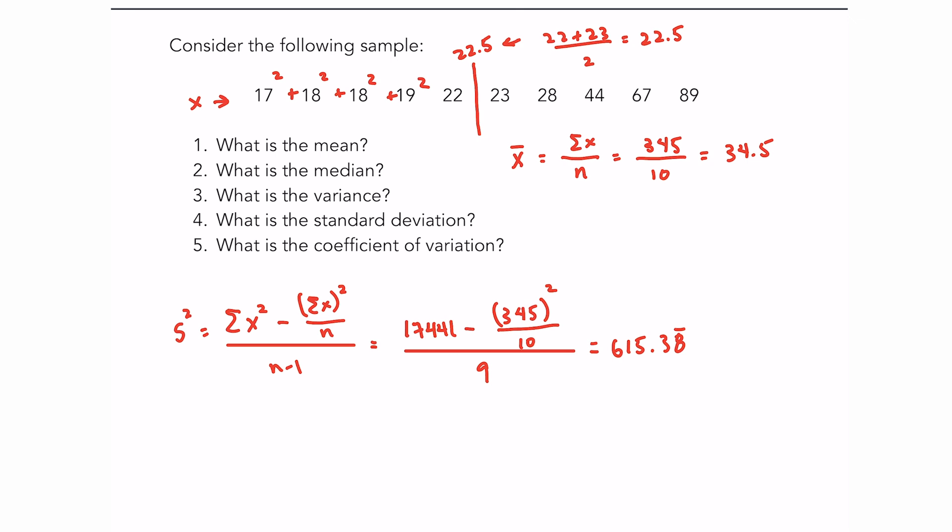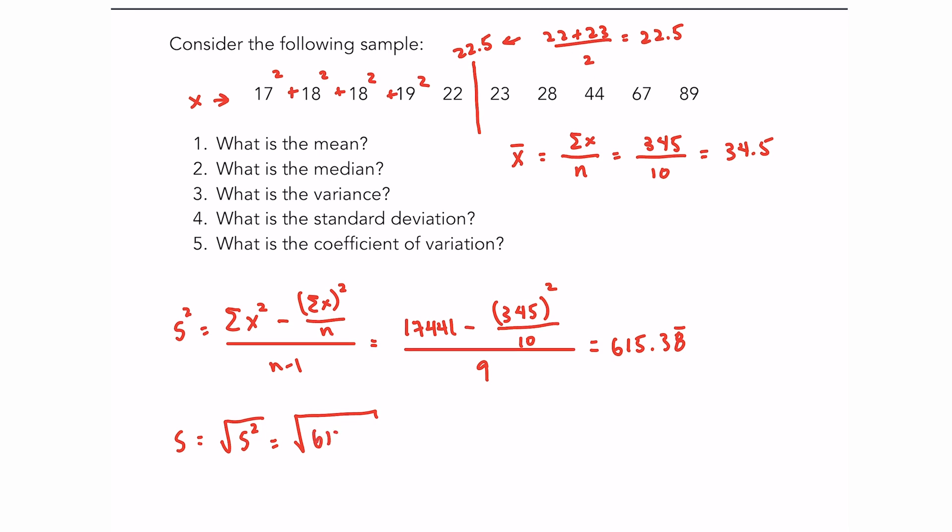For the standard deviation, you're simply going to square root the variance. So the standard deviation is the square root of the variance - the square root of 615.38 repeating - and for that you should get 24.807.